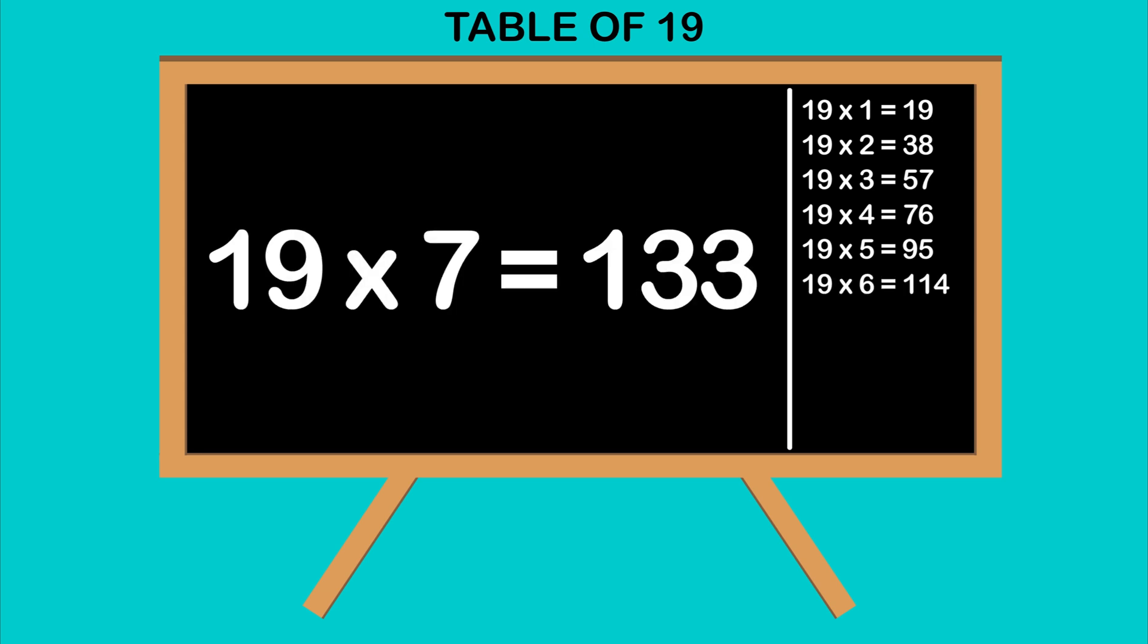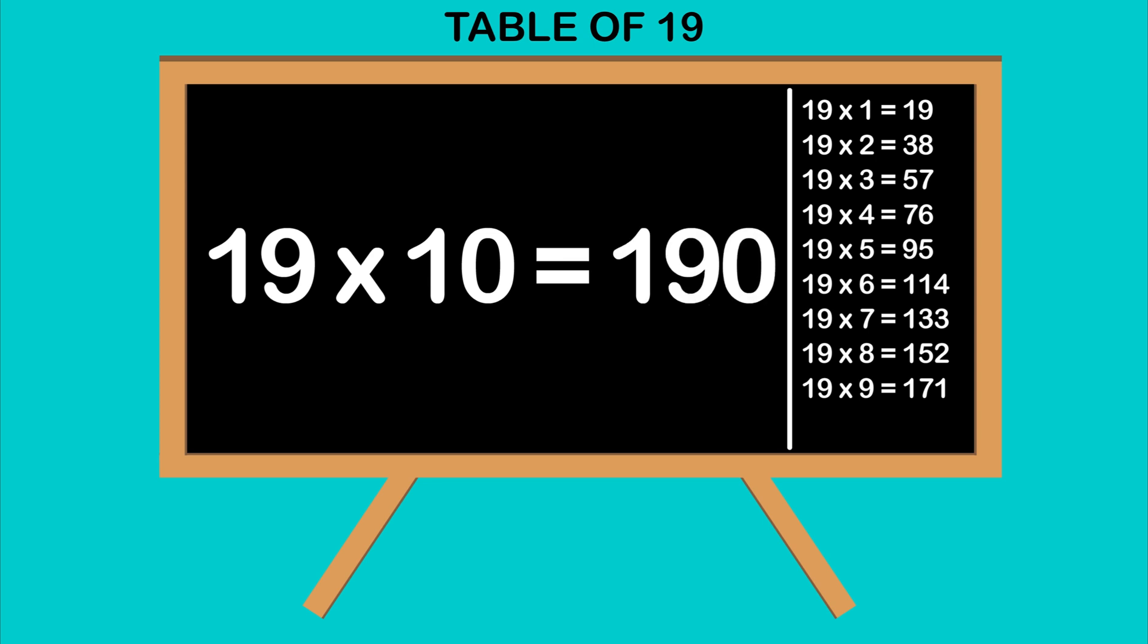19 sevens are 133, 19 eights are 152, 19 nines are 171, 19 tens are 190.